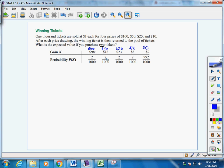So we have two chances for winning $100, two chances for winning $50, two chances for $25, two for $10, which would leave 992 chances to not win a thing.